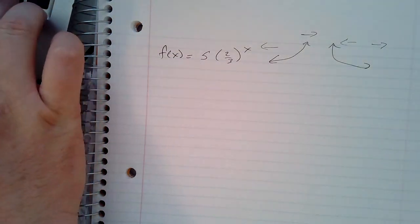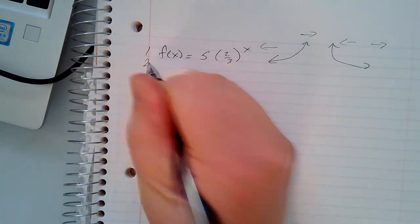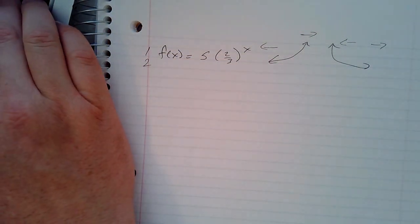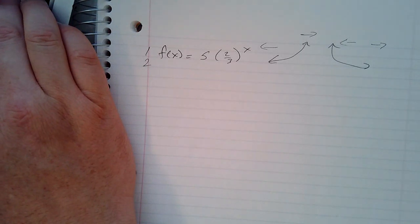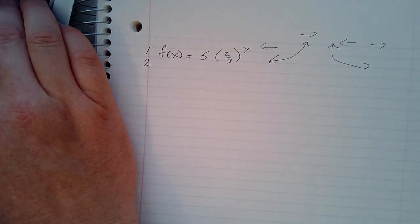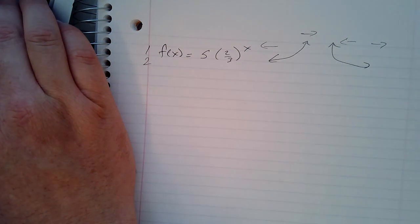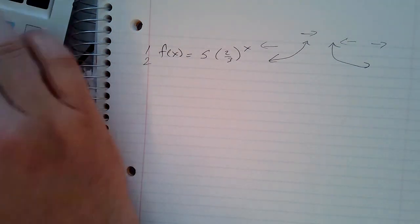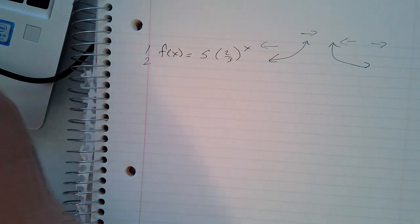Number two would have been, the graph of A = 130(1.05)^T represents the balance of a bank account T years after the opening day, its graph is shown below. What percent does the balance increase each year?